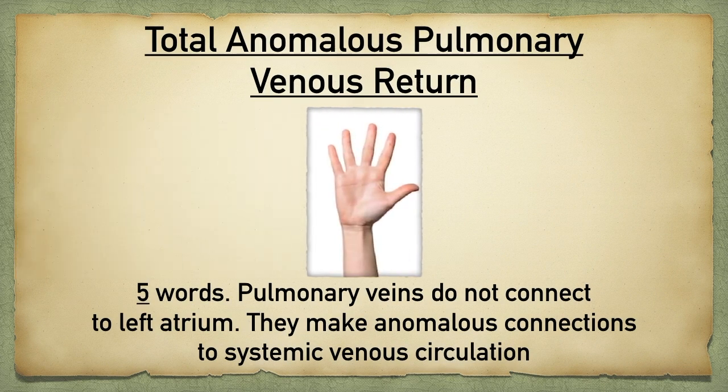Number five — and there are five words to remember here — total anomalous pulmonary venous return. This is when the pulmonary veins do not connect to the left atrium; rather, they connect out to the systemic venous circulation.